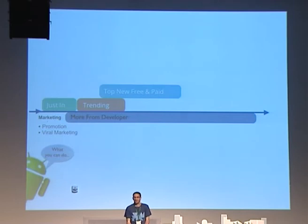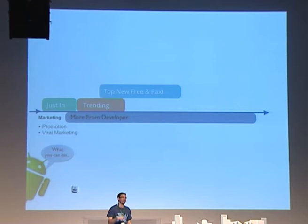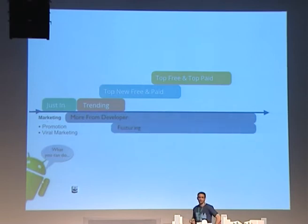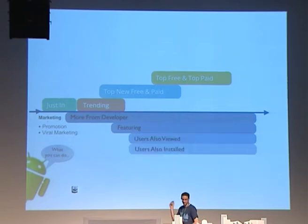In those first 30 days of your application, you could launch the app, give it four or five days to see the feedback you're getting and make sure there are no big bugs on any devices. Then if you have a launch plan, execute it and try to get into the trending list. That's your stepping stone to the top new free and paid, top free and paid. If you get to the top free and paid, you're way more visible to the featuring team. You also get the 'users also viewed' and 'also installed' sections — good places for more promotion.